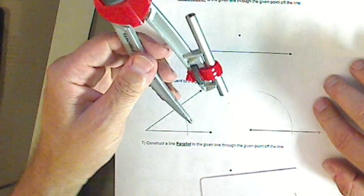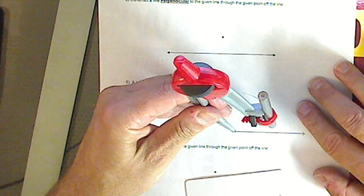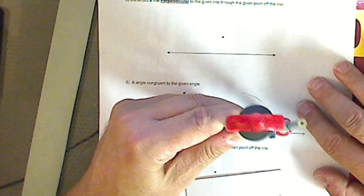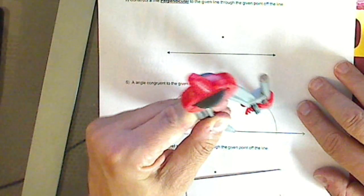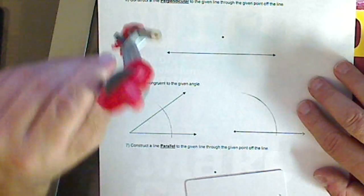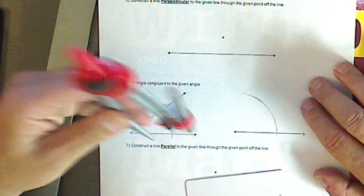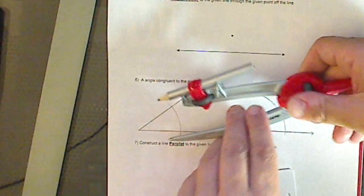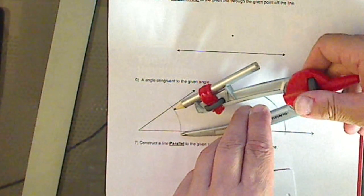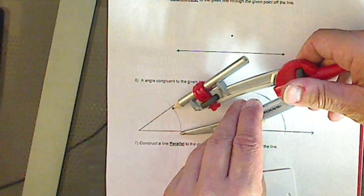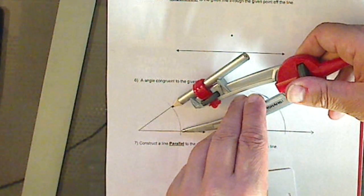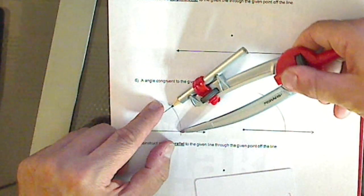Now, am I getting this okay? Hopefully it's dark enough for the camera. Good. Now, I can measure from above or below. It doesn't really matter. But I'm going to use this compass, like I did in construction one, to measure a length. And the length I want is measured from this point to this point.